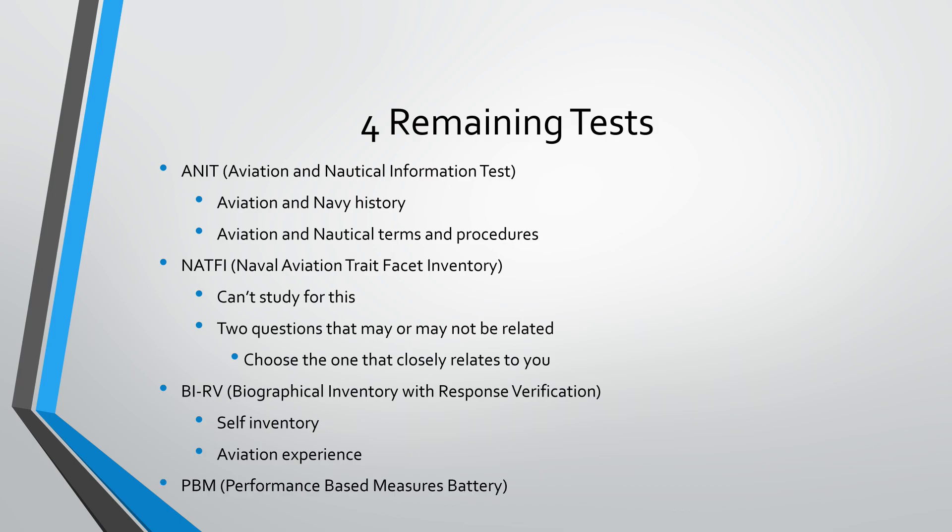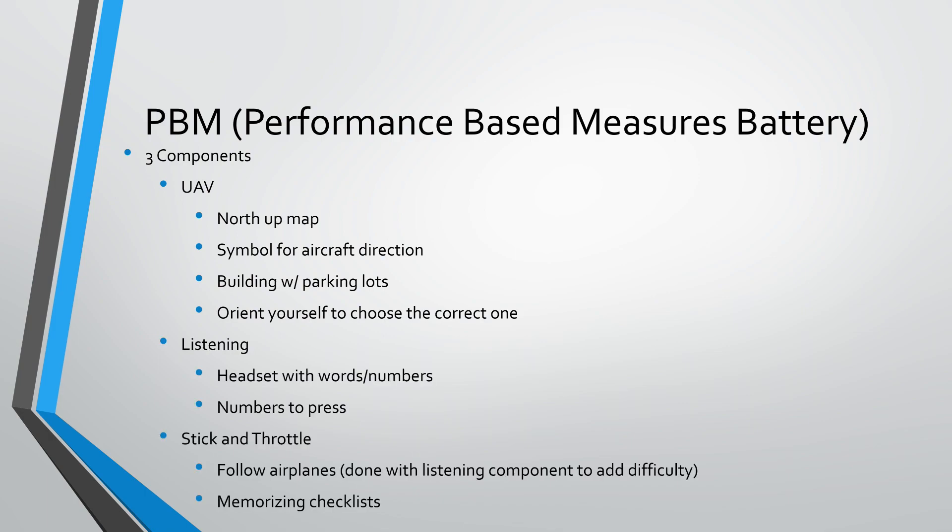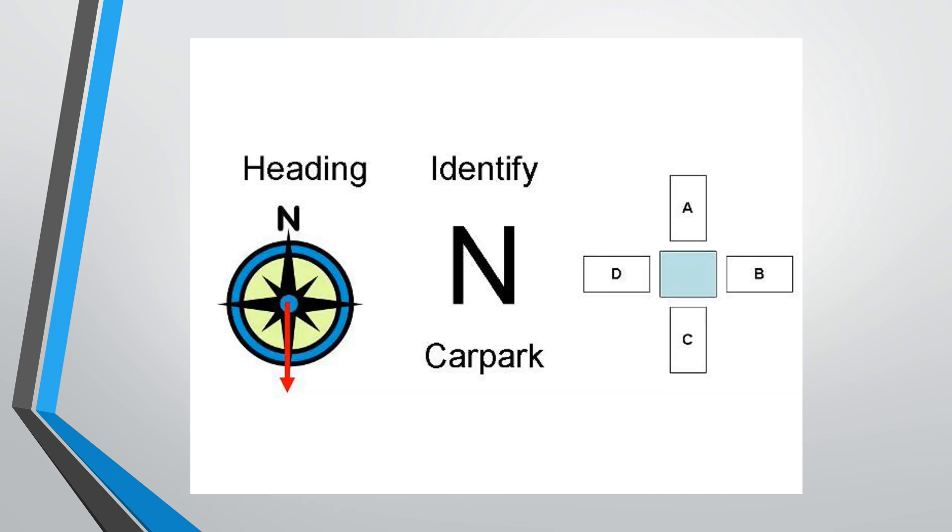And then your PBM, I think this is what everyone's here for. So the PBM is your performance based measures battery. It has three components. It has the UAV component, a listening component, and a stick and throttle component. So the UAV, I'm going to talk about here. You're going to have a north up map with a UAV facing a certain way. It'll tell you which way it's heading and then you're going to have a picture of a car park. So that car park will be in relation to which way you're heading. So since the UAV is heading south, we are going this way. This is technically south. There's a video on YouTube that is extremely helpful. I will link it down below on how to do really well on this section using a piece of scratch sheet of paper and just drawing out a simple compass rose. I did it and it really helped me out. So I will link that down below.